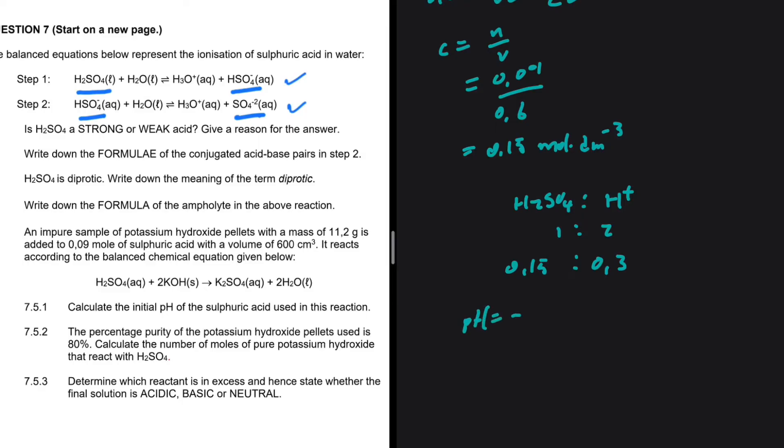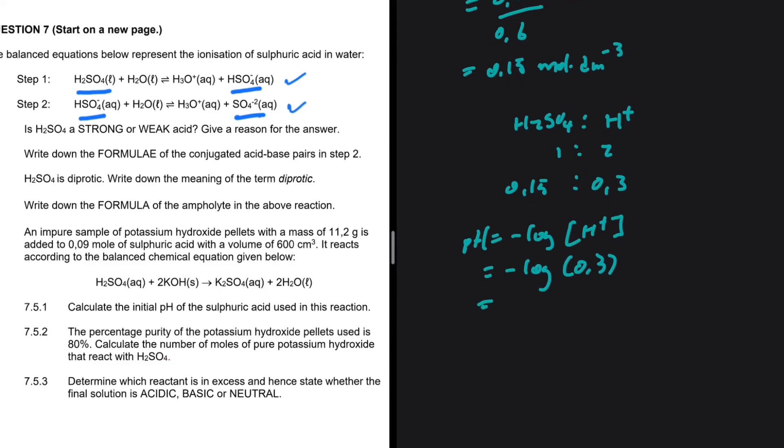pH equals minus log of H plus. So we're going to have minus log of 0.3. Minus log 0.3 is 0.52. So the pH is 0.52. There we go. We have the initial pH of the acid in the reaction.